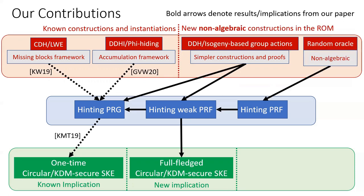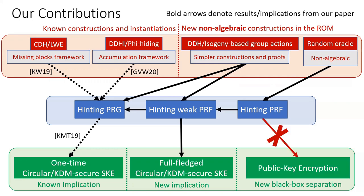Finally, we show that public key techniques are not inherently required to realize cryptographic primitives with the hinting property. Concretely, we show a construction of hinting PRFs given just a random oracle. This also yields a new black box separation result between cryptographic primitives with the hinting property and public key encryption.